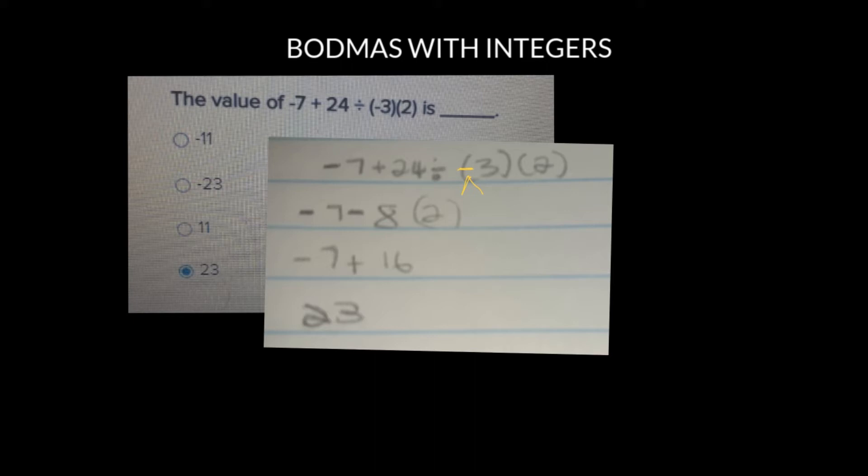The best way to look at a question like this is to ask yourself how many terms the question has. And the truth is this question has two terms. Minus 7 is the first term and plus 24 divided by negative 3 times 2 would be considered the second term. So this is the second term over here. There is the first term. Terms are separated by plus and minus signs.